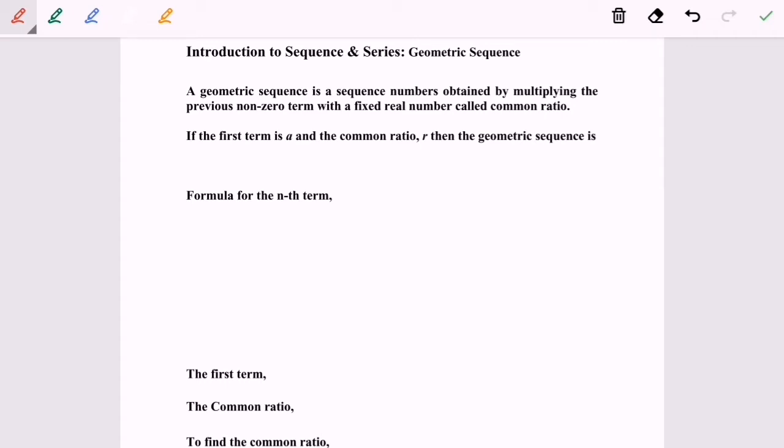If the first term is A and the common ratio is R, then the geometric sequence is: the first term will be A, followed by multiplying the previous non-zero terms with a fixed real number, meaning multiply with R, so we have AR.